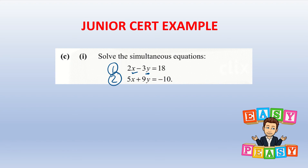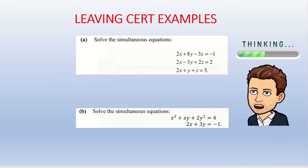There are two ways the Leaving Cert can ask you about simultaneous equations. For the first type, you're no longer dealing with two equations and two unknowns — you're dealing with three equations and three unknowns: equation one, equation two, and equation three, with unknowns x, y, and z.